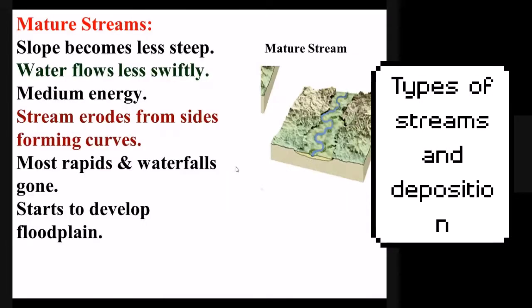Mature streams have less energy than young streams. They are usually on flatter slopes and the water flows a little bit slower, meaning it has less energy. There are almost no rapids or waterfalls left in mature streams, and they also have a floodplain, albeit a smaller floodplain than old streams. Usually flanking both sides of a mature stream is a type of hill or at least a steeper slope.